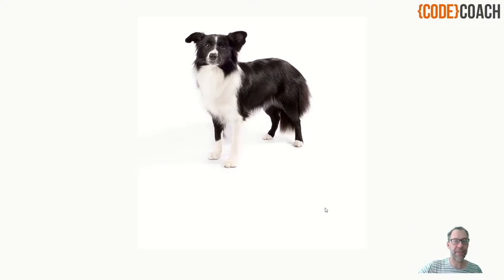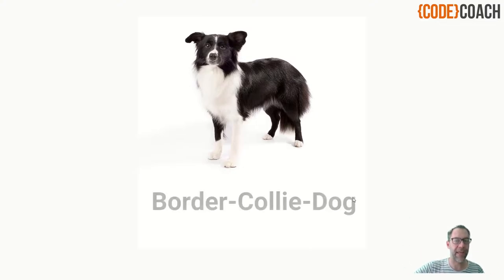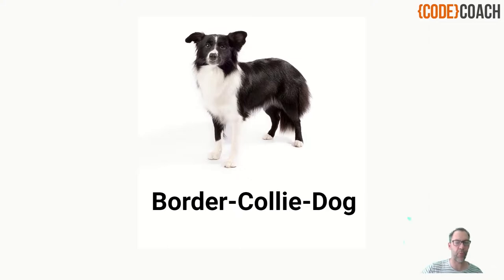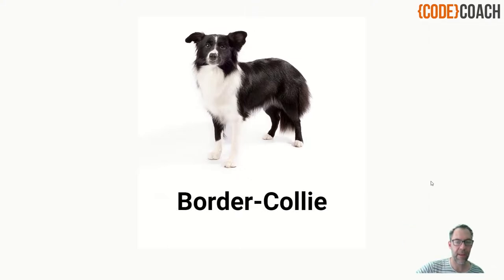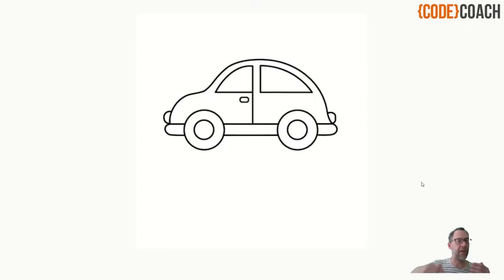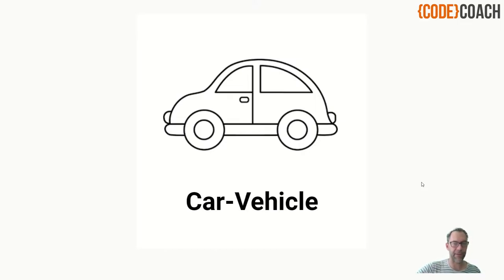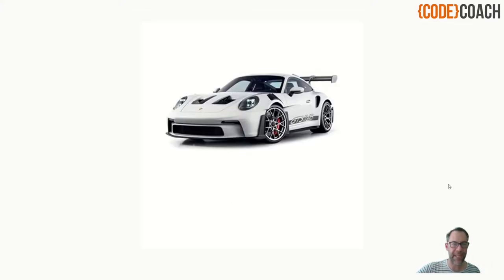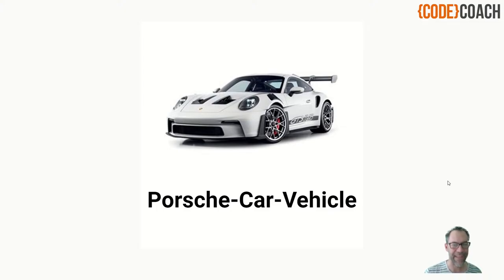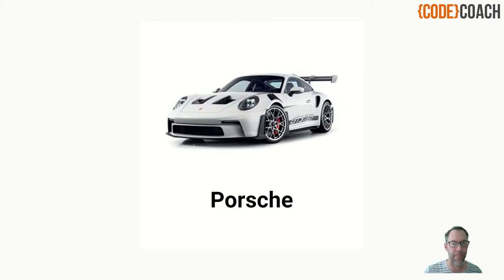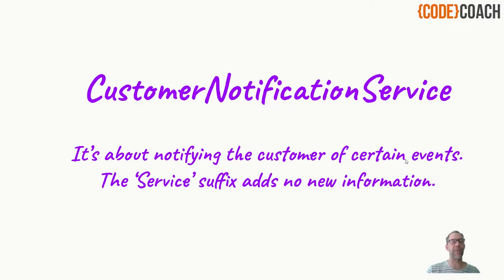What about this? This is a 'car vehicle' — who would say that? Obviously, it's just a car. What about here? It's a 'Porsche car vehicle' — ridiculous, we wouldn't say that. Of course they would just say it's a Porsche, or maybe a Porsche GT3 RS. This is what happens when we name our services in this manner — customer notification service.